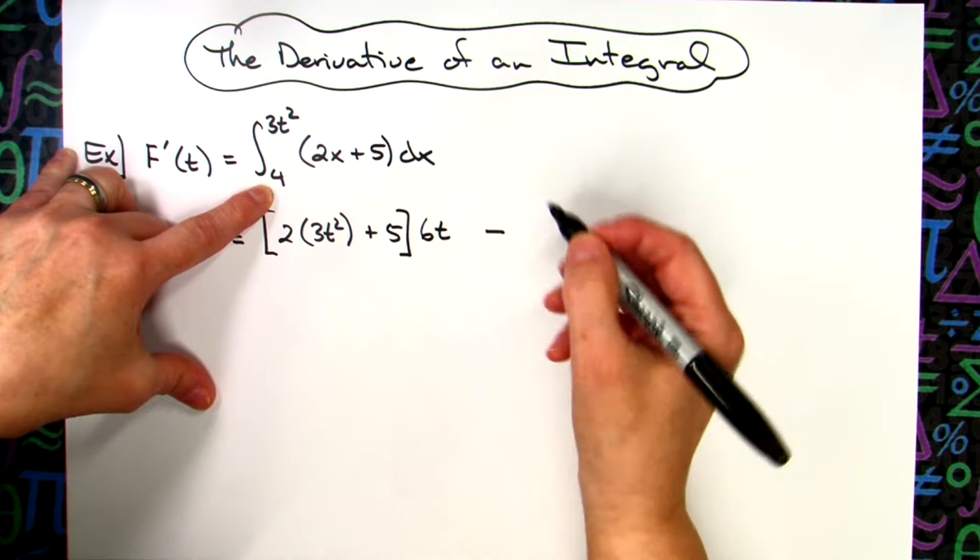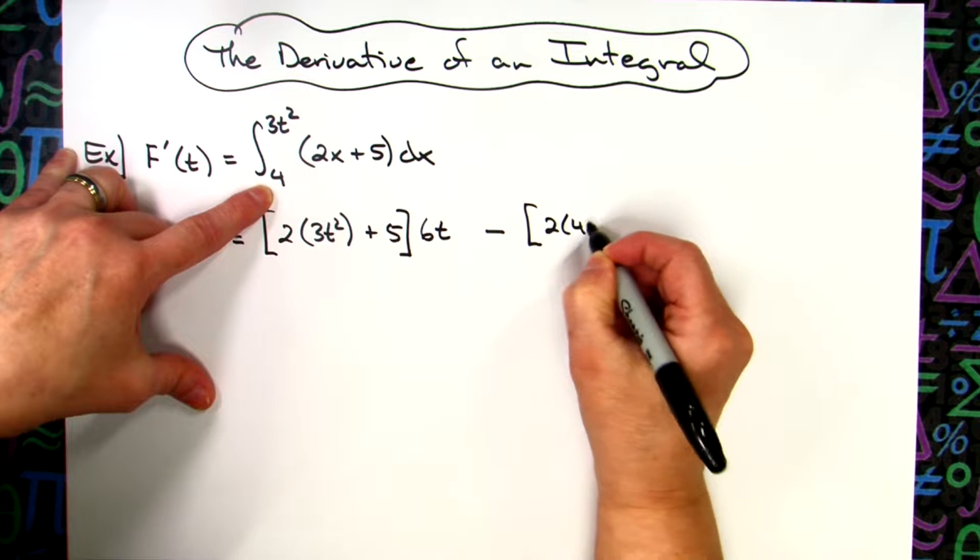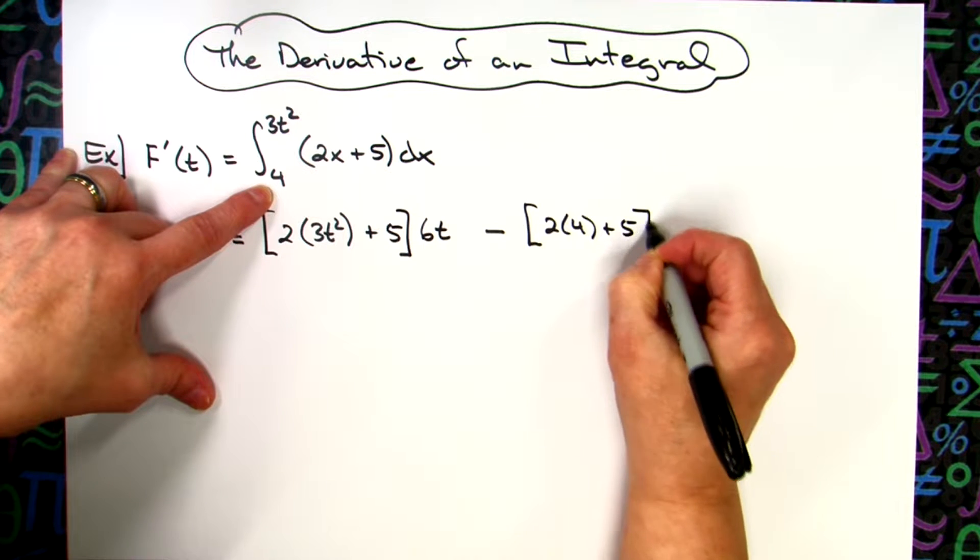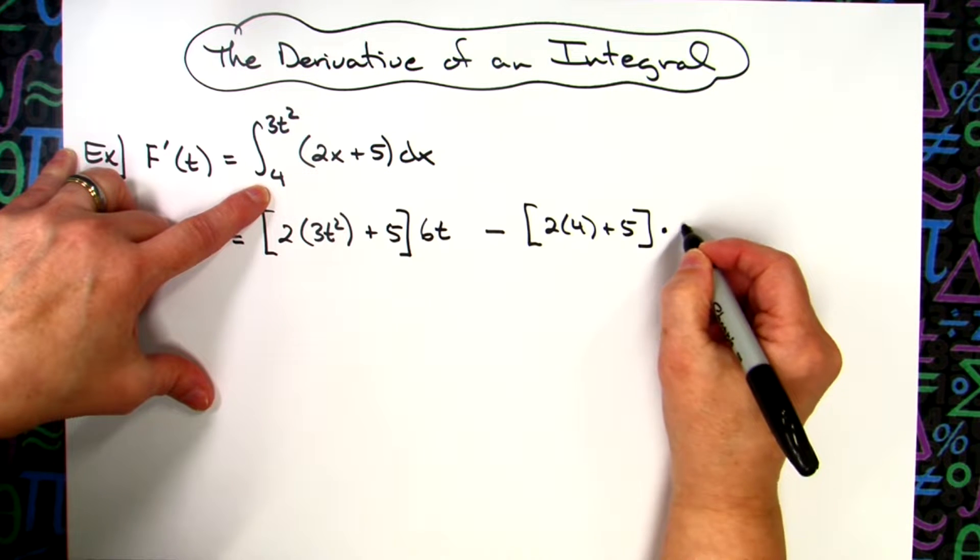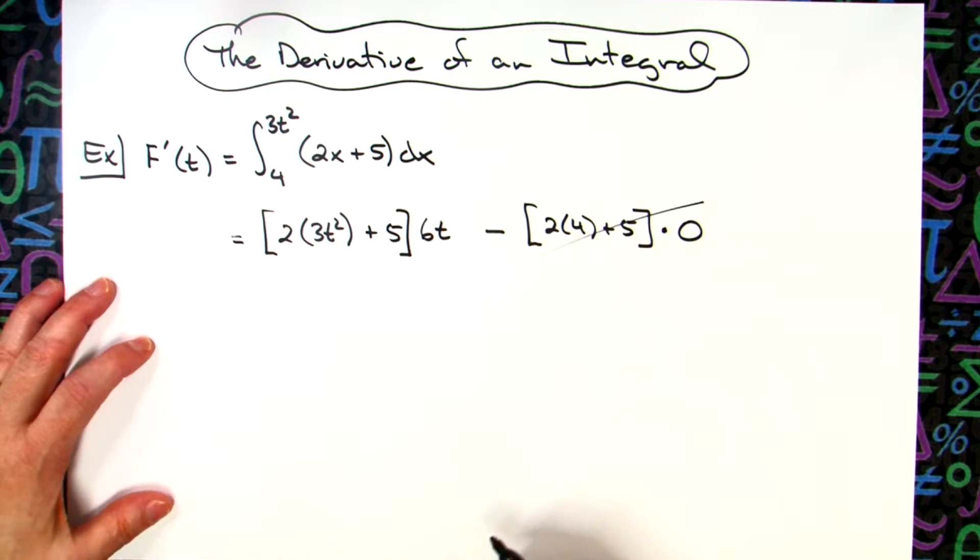Take the bottom limit and plug it in. So then I'm going to have 2 times 4 plus that 5, and then times the derivative of that lower limit there, which is 0. So that makes this whole entire product 0. It falls out.